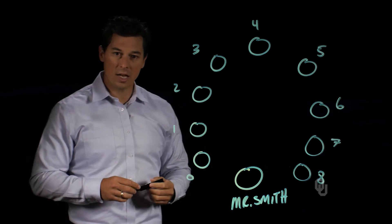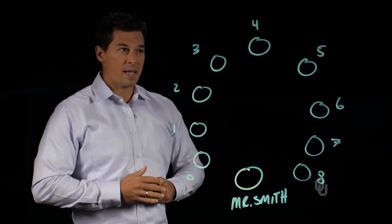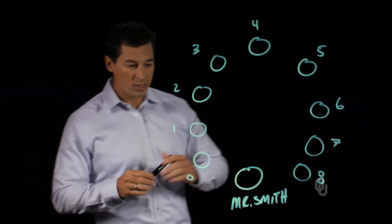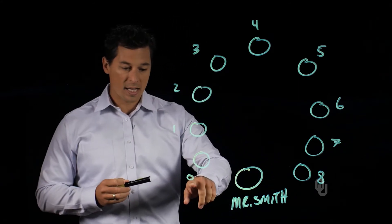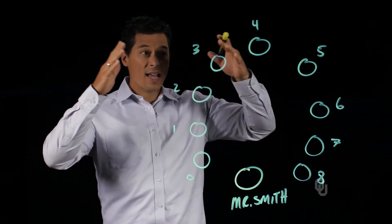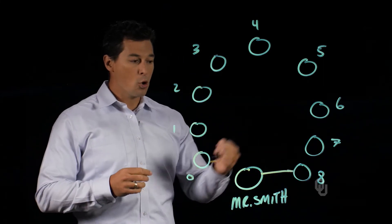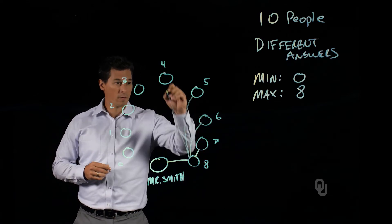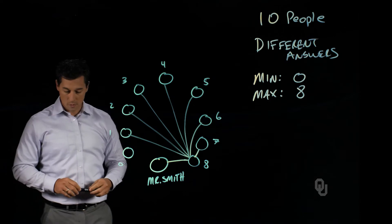Here is a visualization of our problem. The person who shook eight other people's hands could not have shaken the anti-social person's hand, so they must have shaken hands with everybody else. We'll draw lines connecting person eight to the others: one, two, three, four, five, six, seven, and eight.